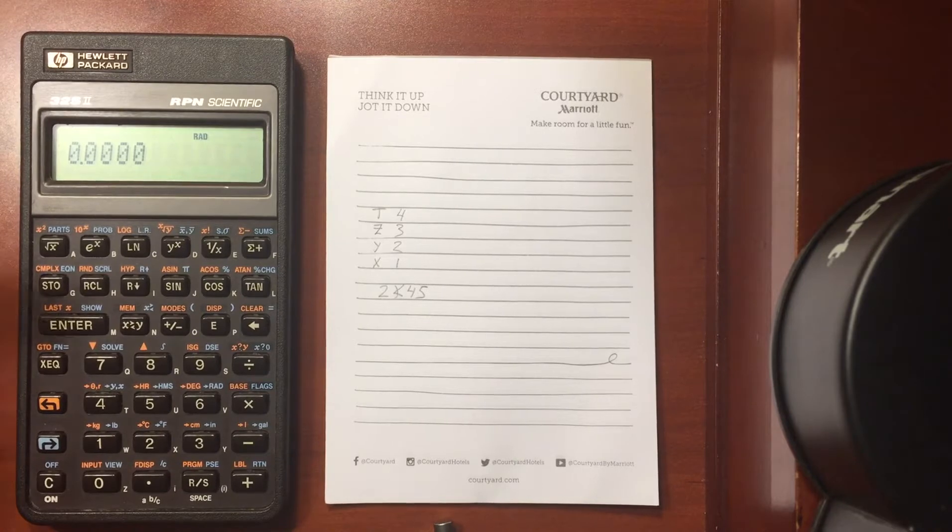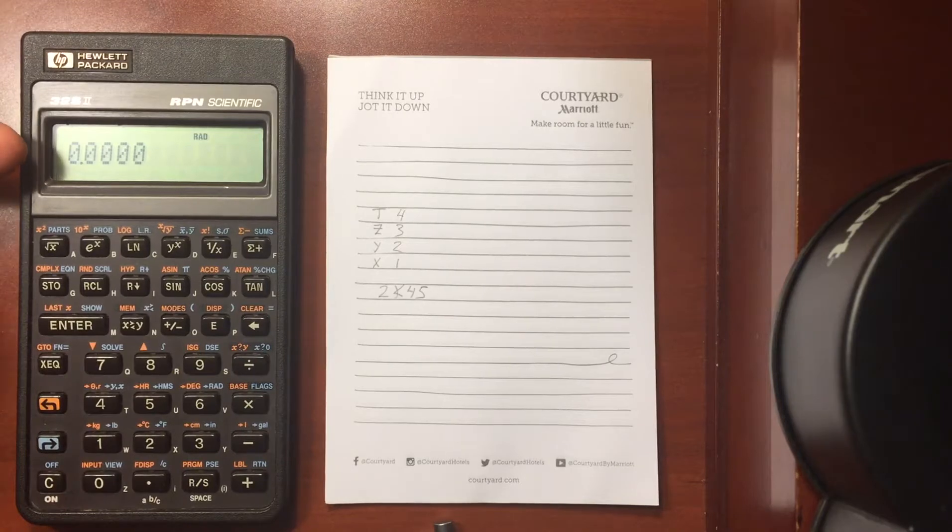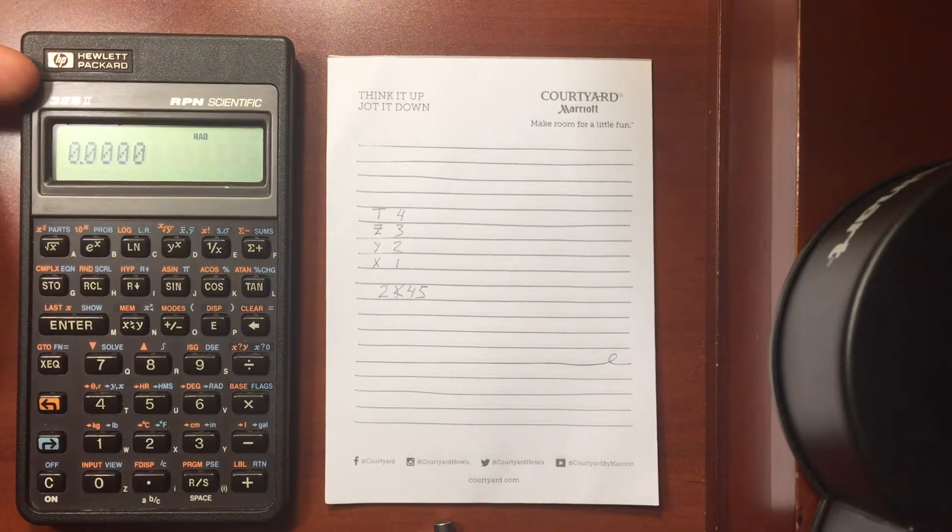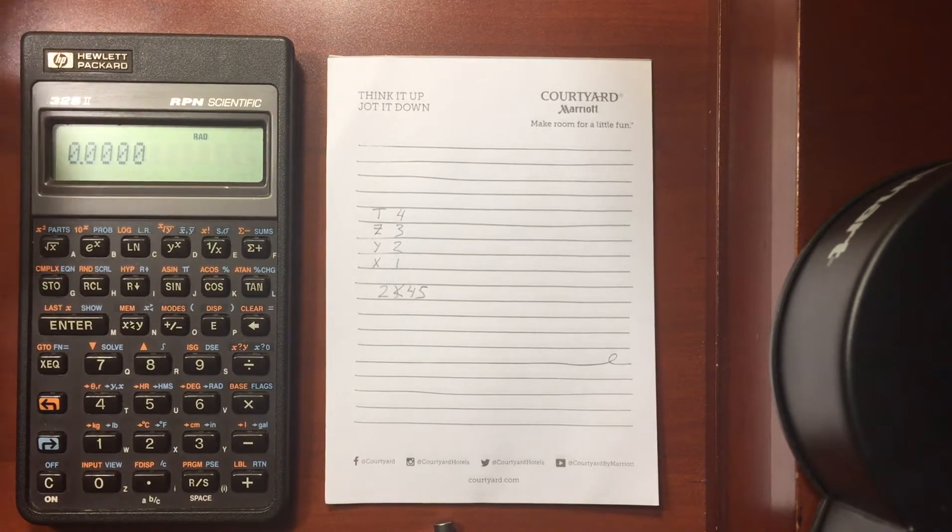So the stack, there are four registers, four basic registers in the HP calculator. You have your X register, which is always what is displayed here. Then you have internally a Y register, a Z register, and a T register.